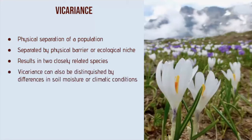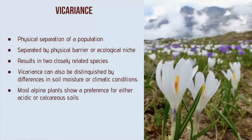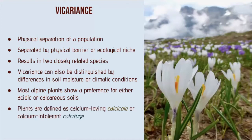Vicariants can also be distinguished by differences in soil moisture or climatic conditions, and most alpine plants show a preference for either acidic or calcareous soils. So plants are defined as either calcium-loving calcicols, or calcium-intolerant calcifuge species.